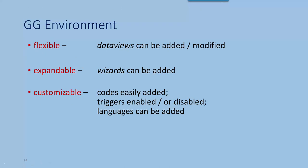Green Global, if you read the original documentation, was described as being flexible, expandable, and customizable. It's flexible because it consists of many data views. It's expandable because you can add wizards. It's customizable because you can put in your own codes, turn on or off triggers, and put it in different languages.